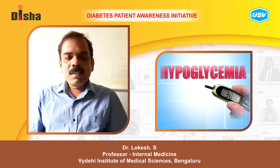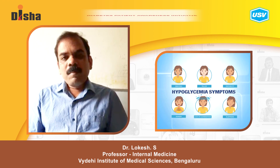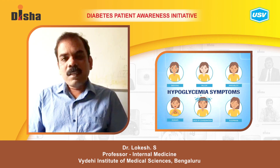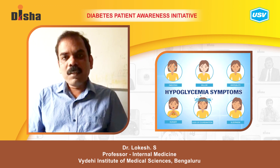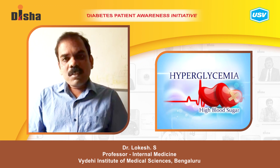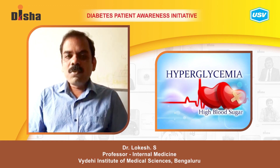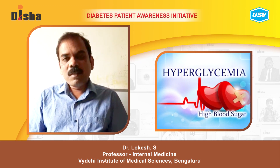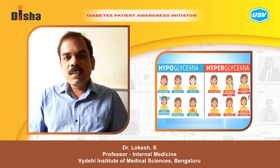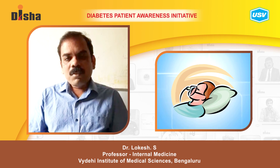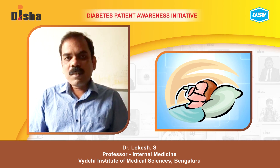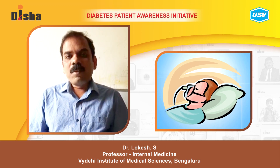If a patient develops hypoglycemia — that is, insulin shock — they will start feeling palpitations, meaning the heart is running fast, along with irritability, headache, giddiness, and profuse sweating. These are symptoms of hypoglycemia. In hyperglycemia, when insulin dosage is insufficient, the patient will start developing symptoms of diabetic coma: suddenly passing large amounts of urine and losing consciousness. We must identify these complications early to prevent catastrophic outcomes.